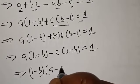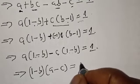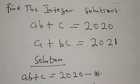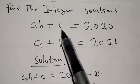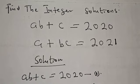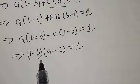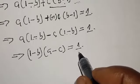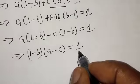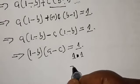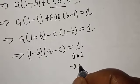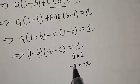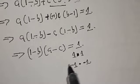The question says find the integer solutions, so A, B, and C are all integers. This also means (1 minus B) and (A minus C) are integers. We need to find the factor pairs of 1: these are (1)(1) and (minus 1)(minus 1). So we have two cases.